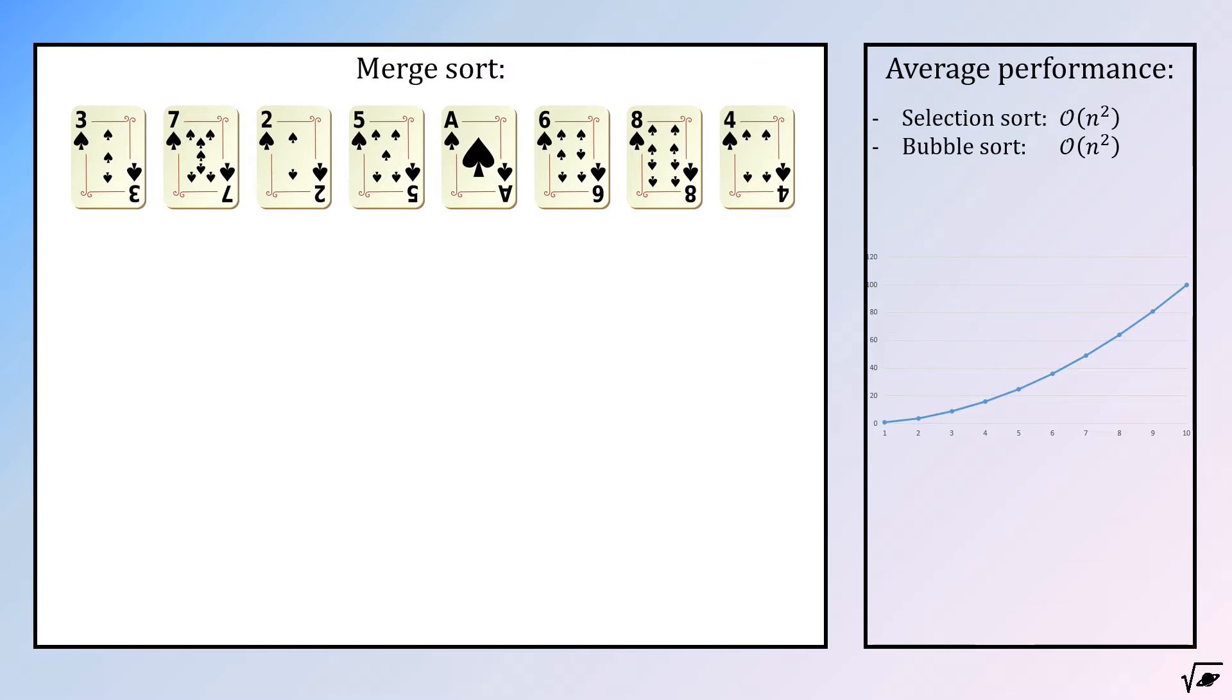Merge sort is an algorithm that works in the order of n times log n. To explain the procedure of this algorithm, we must not see the deck as one sequence, but as individual sequences that we will merge together, hence the name.